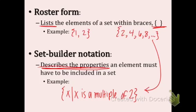x is a multiple of 2. So 2, 4, 6, 8, dot dot dot is the roster form of the set, and x such that x is a multiple of 2, is the set-builder. The first one just lists the elements, and the second one describes the properties of the elements.